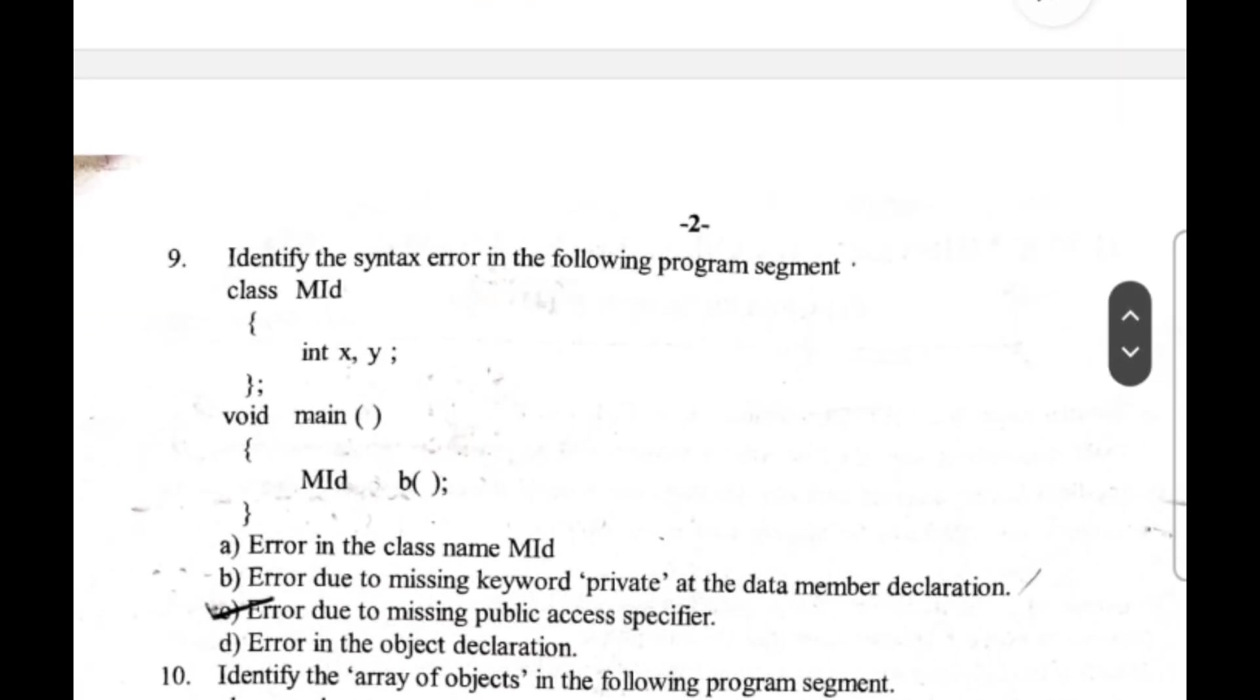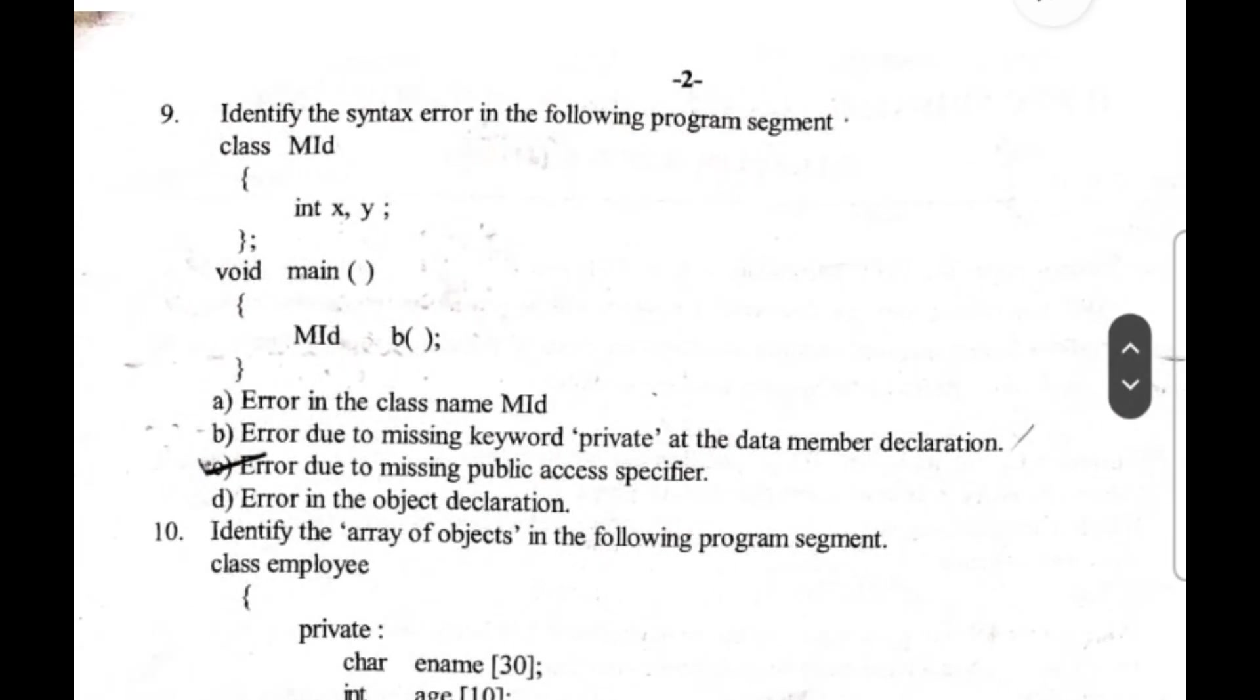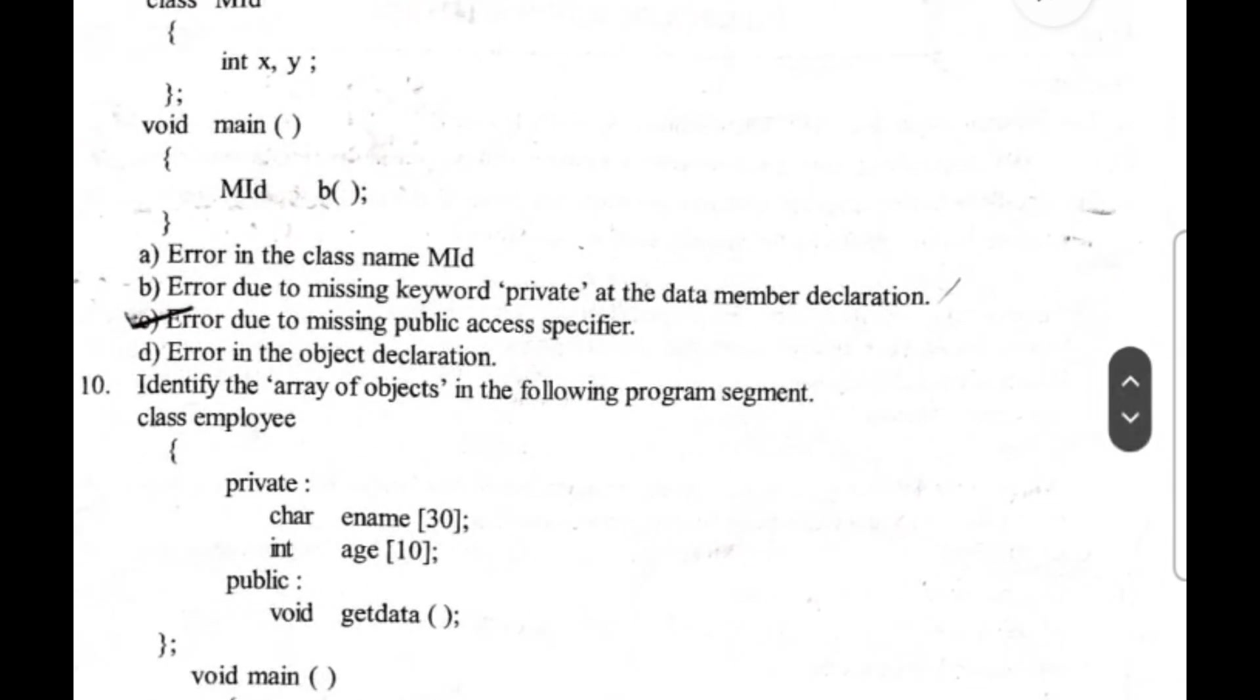Next, identify the array of objects in the following program segment, class employee. The correct answer for this question is option D, supervisor 10, because this option declares an array of 10 objects of the employee class called supervisors.